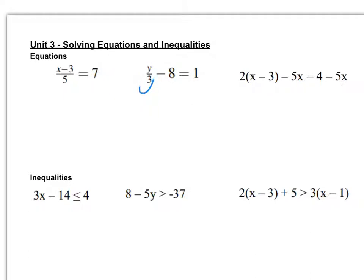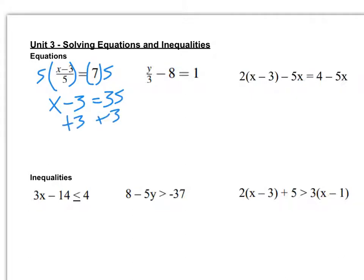In the first one, since the entire side is a fraction, I'm going to get rid of the denominator by multiplying both sides by 5. So I get x minus 3 equals 35, and then I add 3 to both sides. So x equals 38.